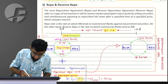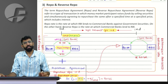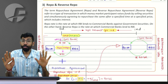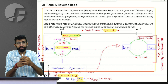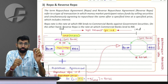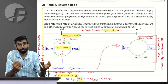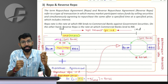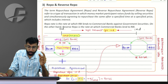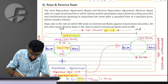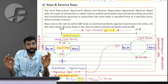So repo and reverse repo — we need to get started with this as a kind of money market, not really instrument, but a borrowing. As we realize, treasury bill, commercial paper, certificate of deposits — all these things are ultimately a kind of borrowing. So this one is also a kind of borrowing. But how does the borrowing happen?